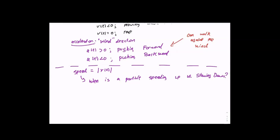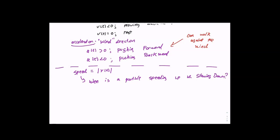That is our big question today — when is a particle speeding up or slowing down? A lot of students make mistakes because they don't take time to learn it. When we talk about speeding up versus slowing down, acceleration alone does not determine speed up or slow down. A lot of people think: positive acceleration means speeding up, negative means slowing down — that will give you zero credit. It's the most common mistake.